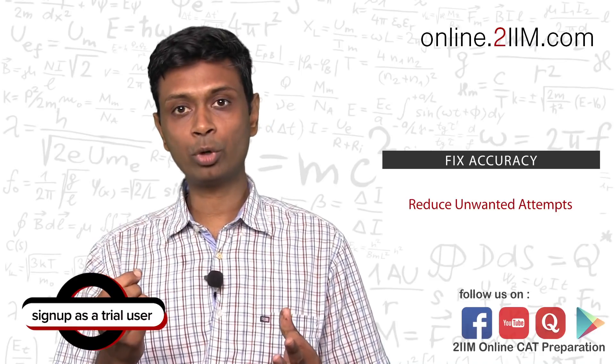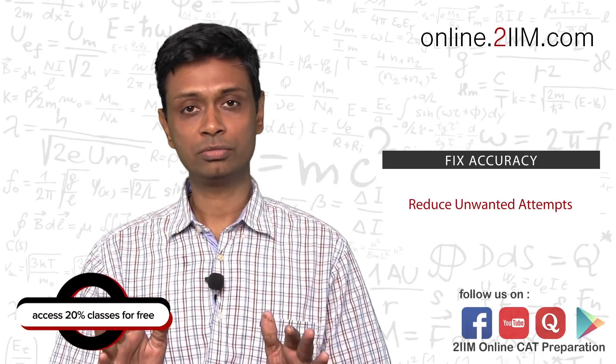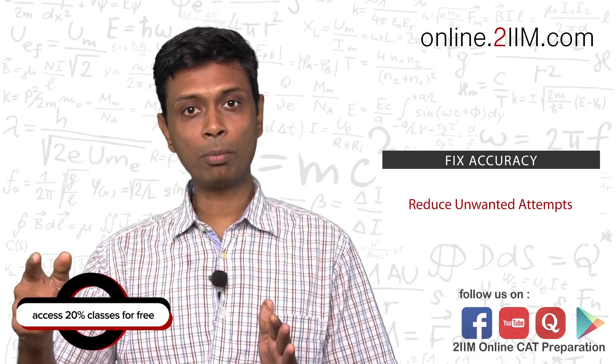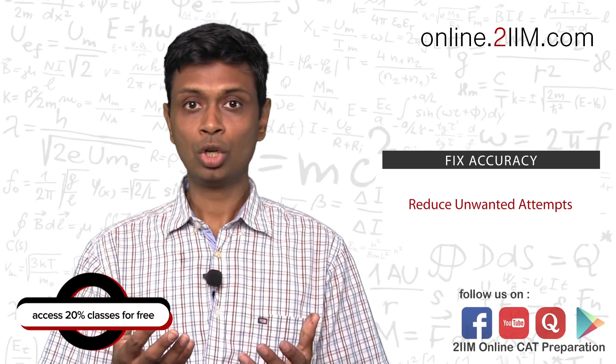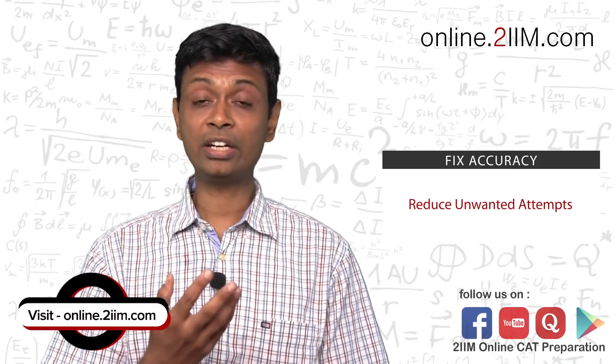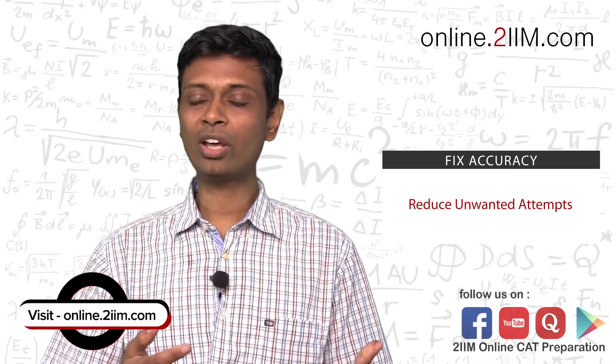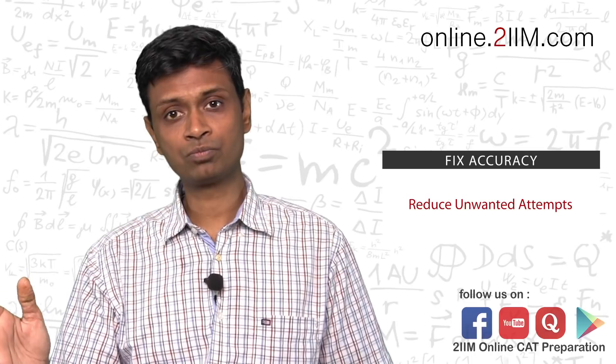Very often I find that students go from, say, 90 to the 99.2, 99.3 without increasing attempts at all. Their percentiles go up because their accuracy creeps up. If you're attempting 70 questions and you're at the 90th percentile level, then you don't have much room for increasing attempts. You can attempt 70 questions and get 99 by working on accuracy.